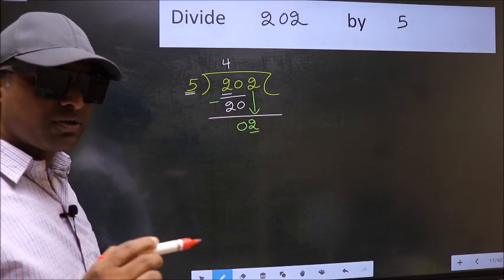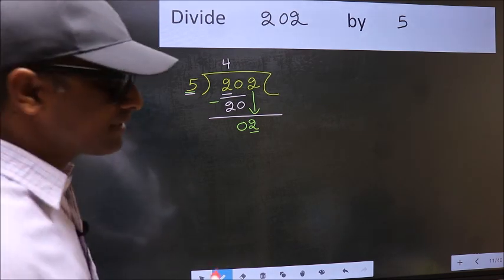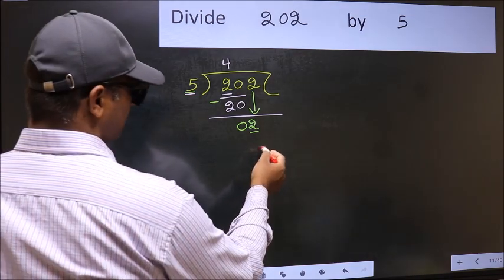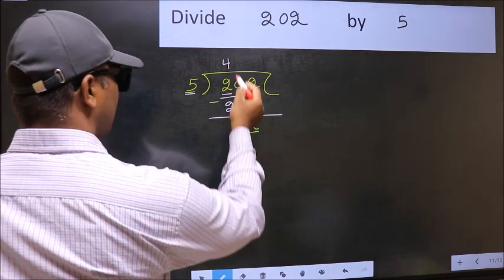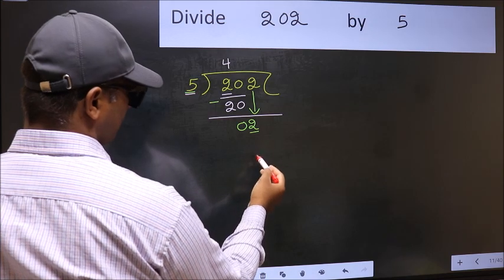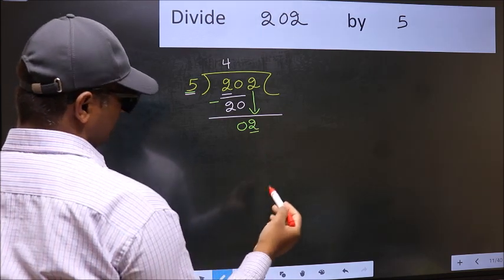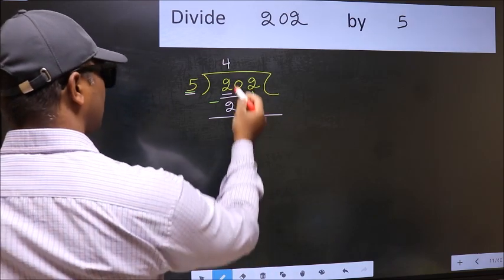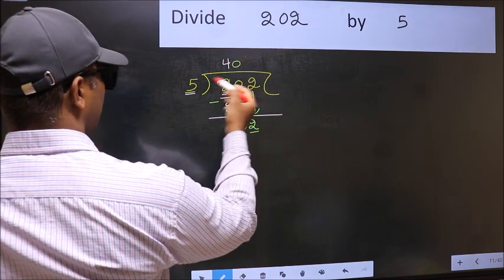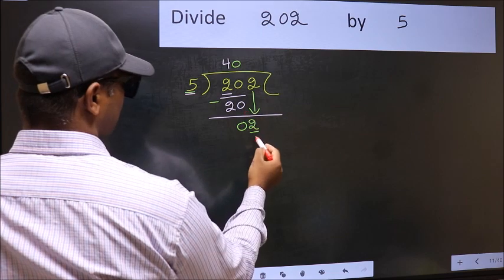Instead, what you should think of doing is, what number should we write here. If I take 1 here, I will get 5. But 5 is larger than 2. So what we should do is we should take 0. So 5 into 0, 0.